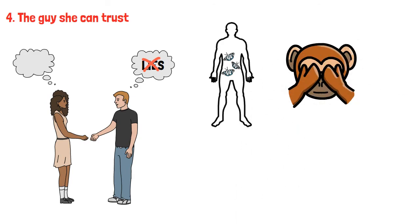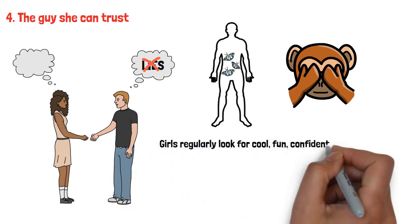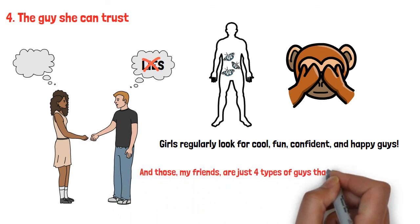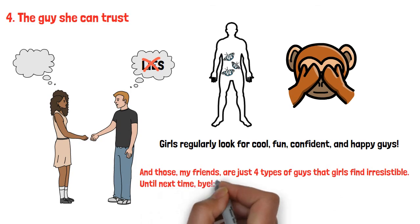Trust takes effort and time to build, and if you are determined to put in the work, you can have the girl you've always dreamed of. Girls regularly look for cool, fun, confident, and happy guys. The reason is that they need calm and contentment in their busy lives. And those, my friends, are just four types of guys that girls find irresistible.